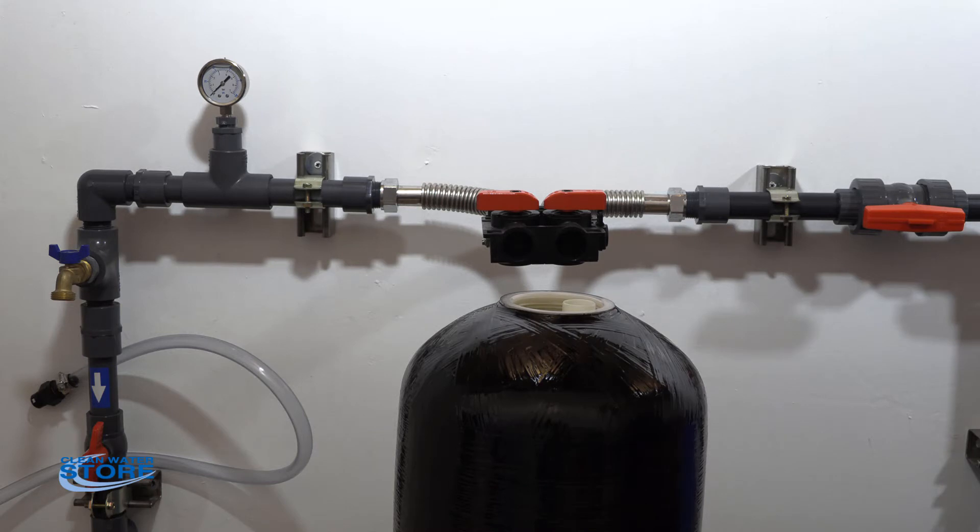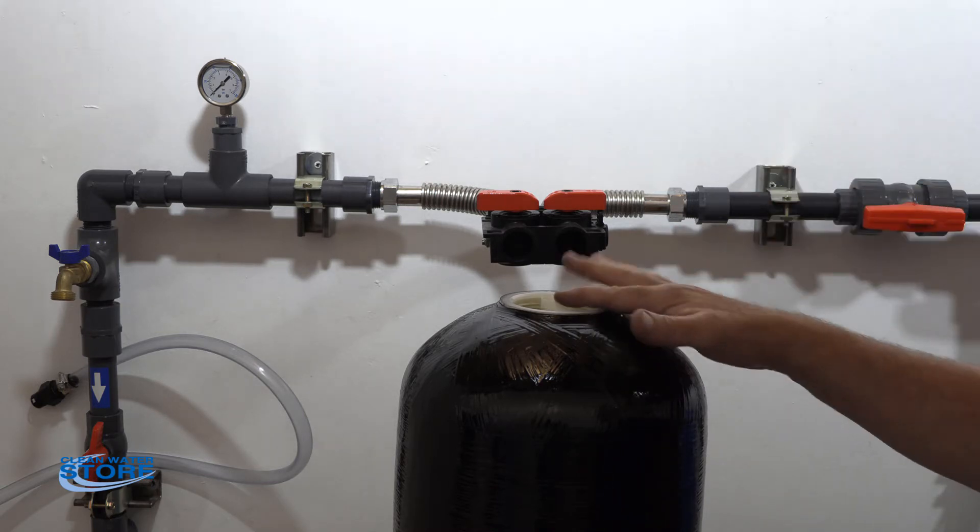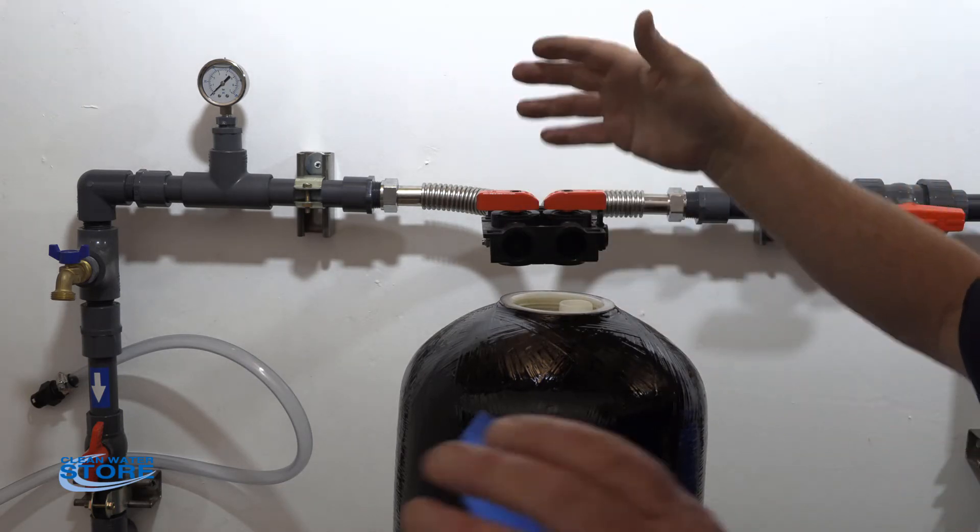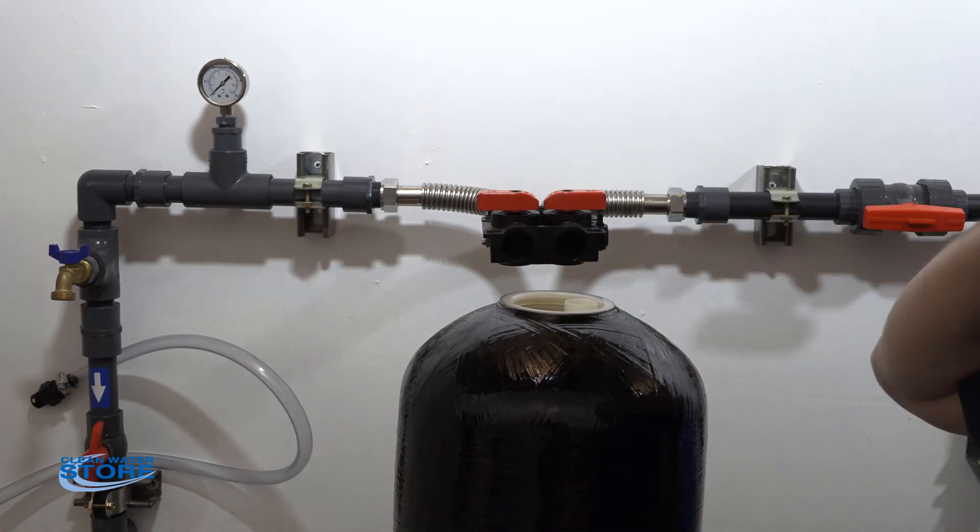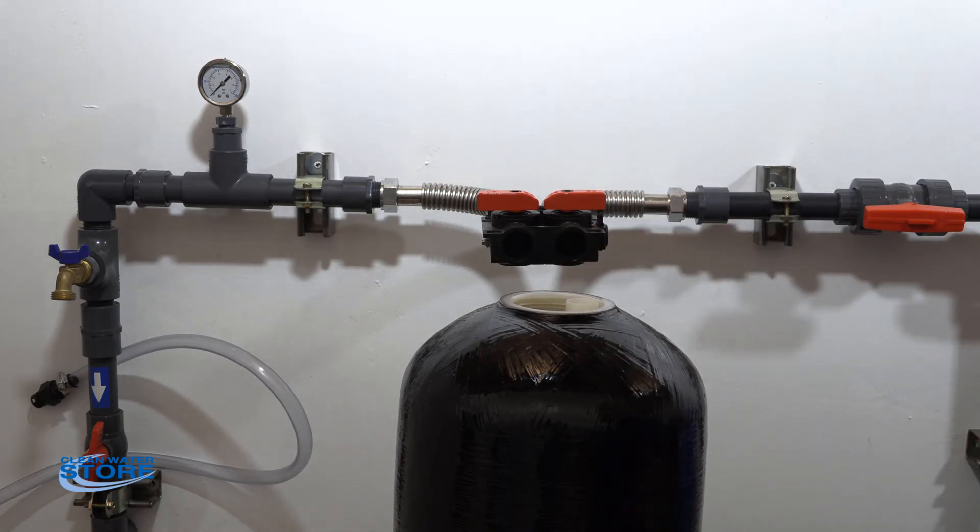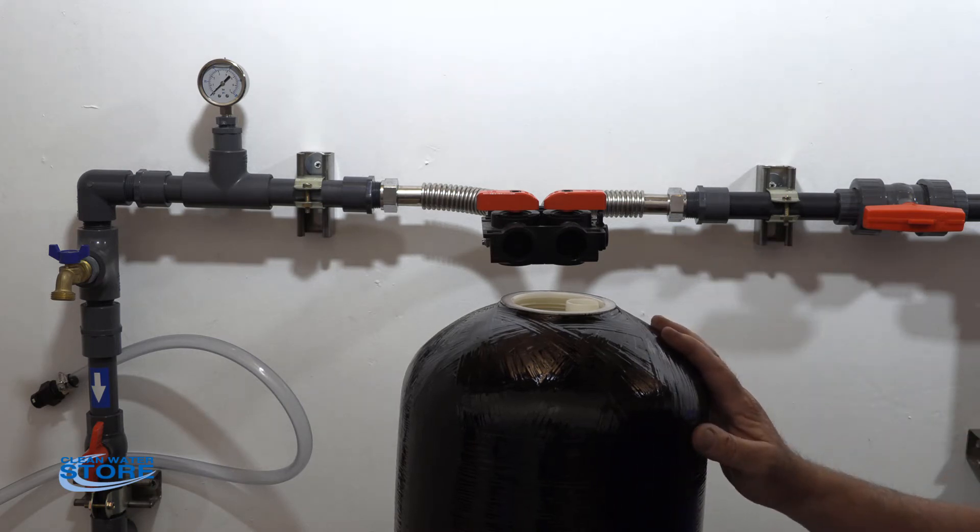The other thing you want to be careful of is once your media is in here and your D-tube's in, you never want to pull the D-tube up because the media and the gravel at the bottom will then flow in underneath this. It'll stick up too high and you potentially have to dump it all out and start all over again. And if you've gotten to this point already, you know you don't want to do that over.